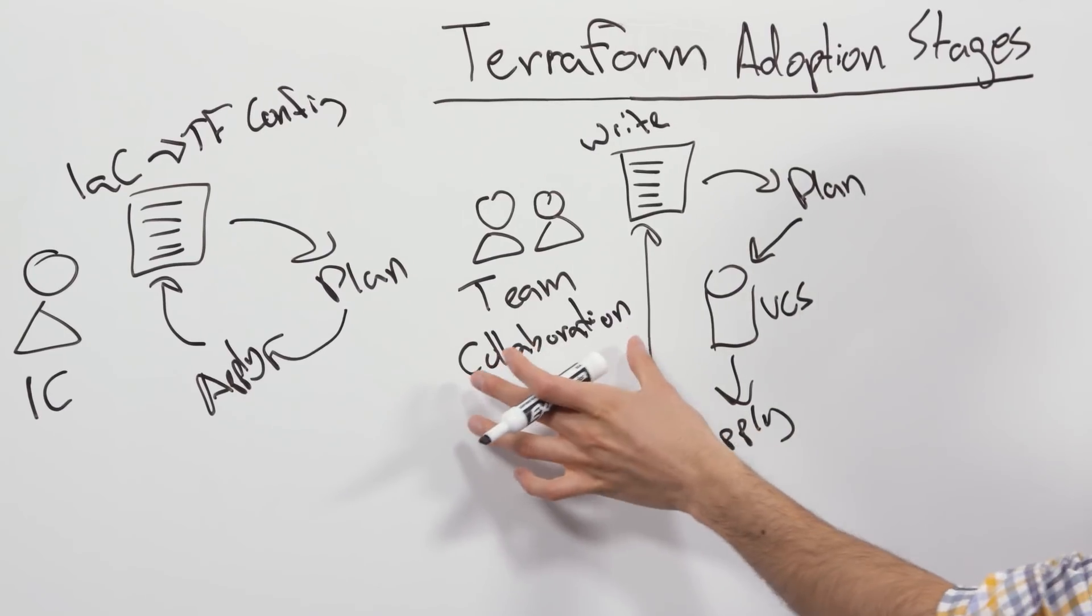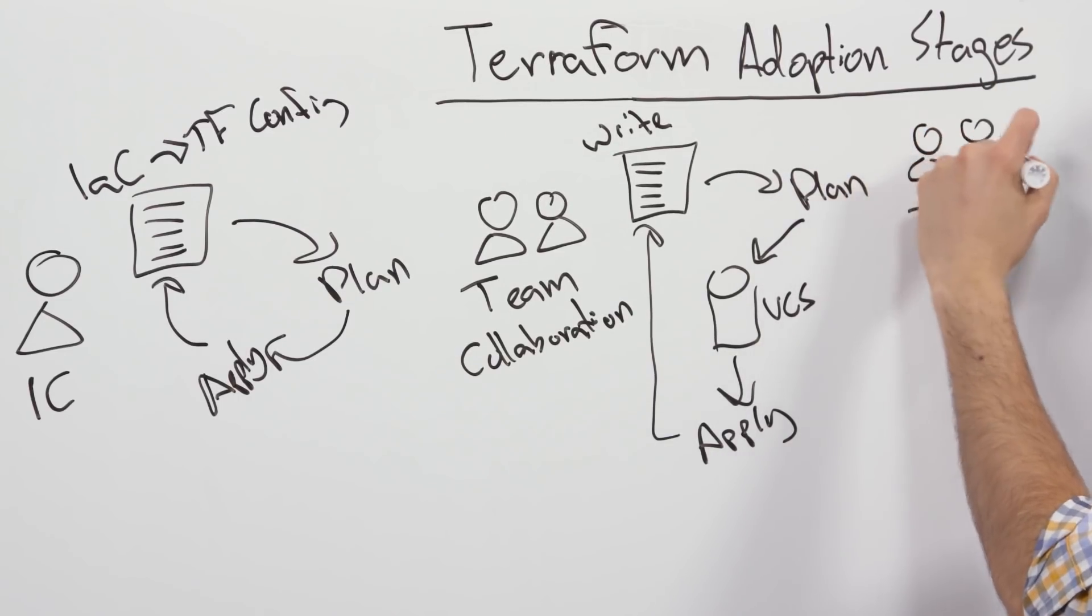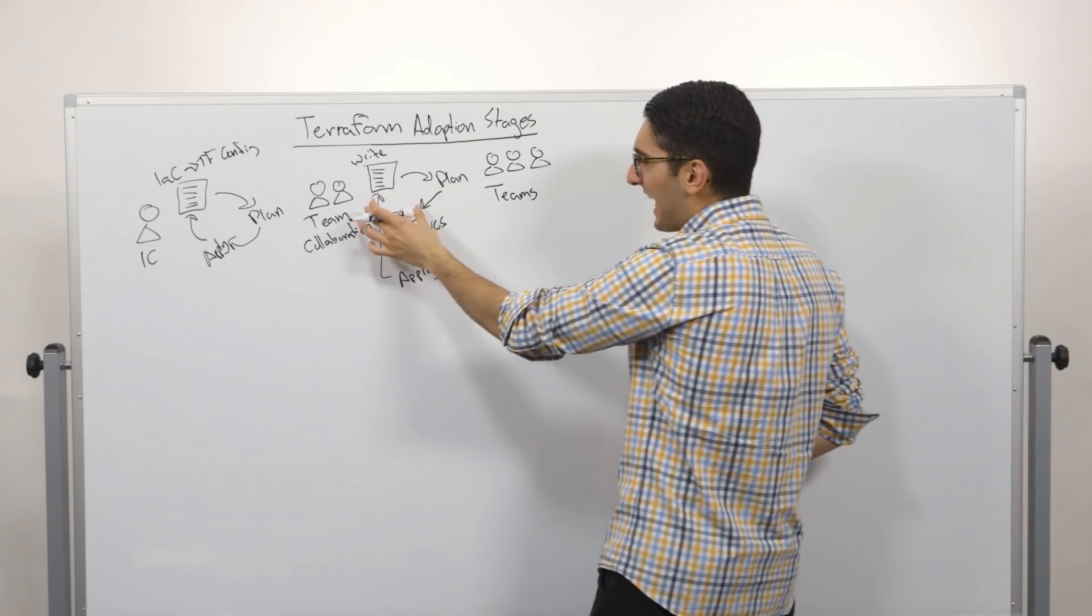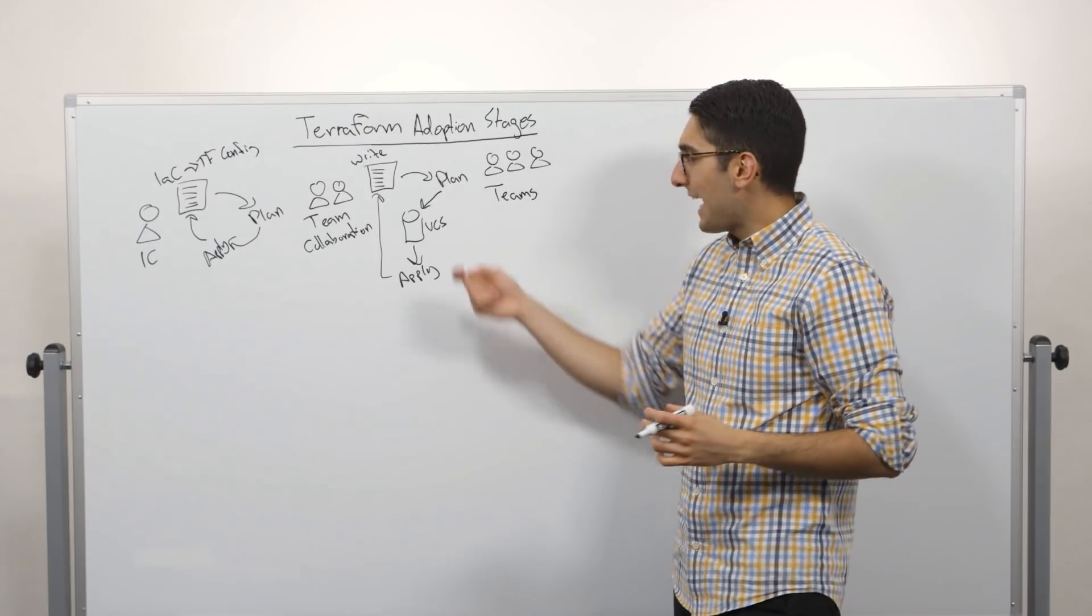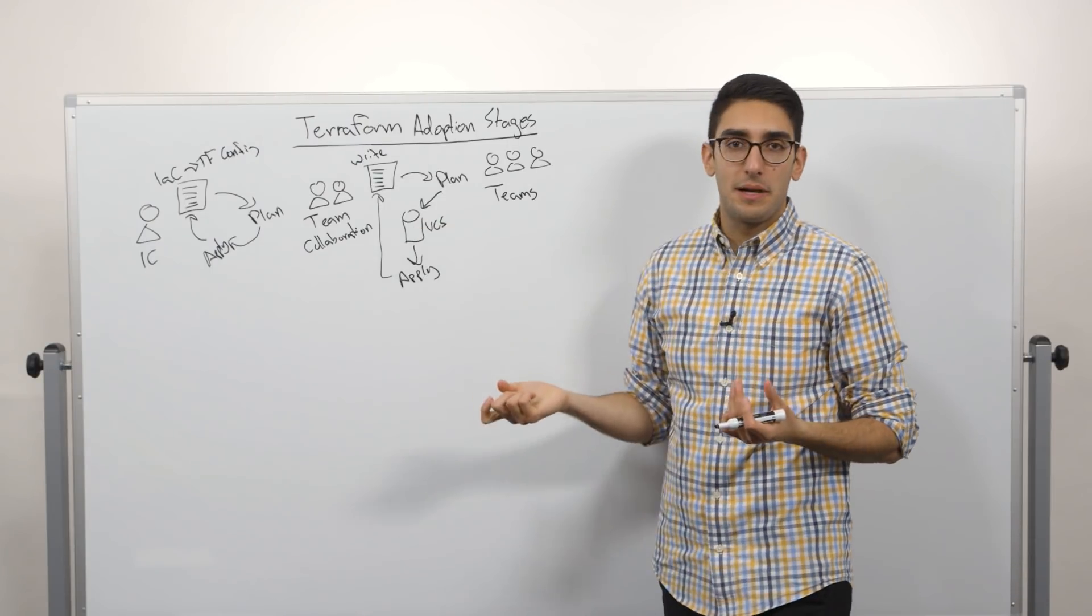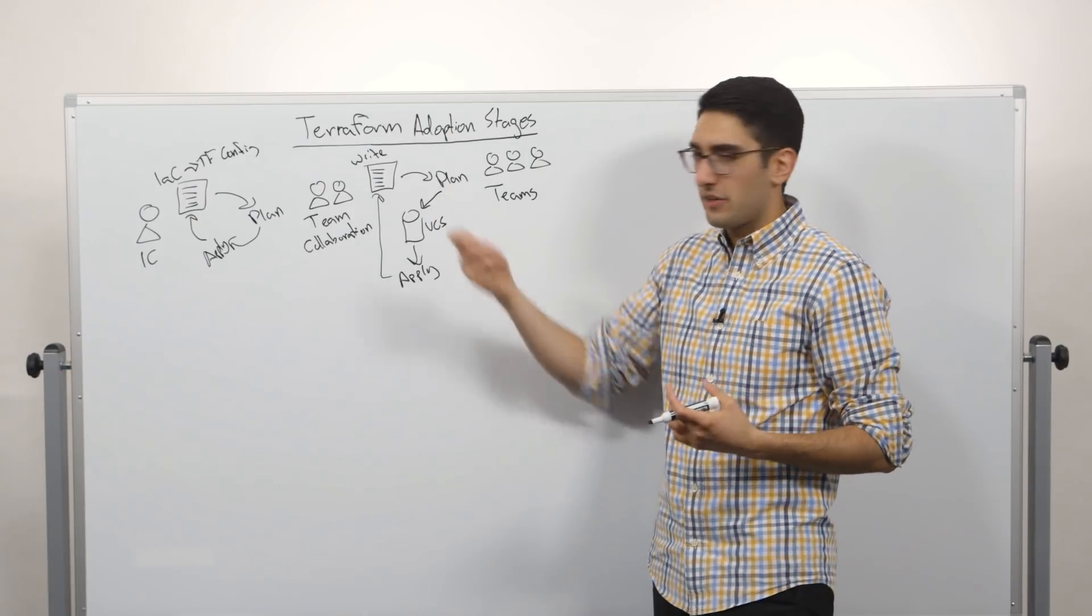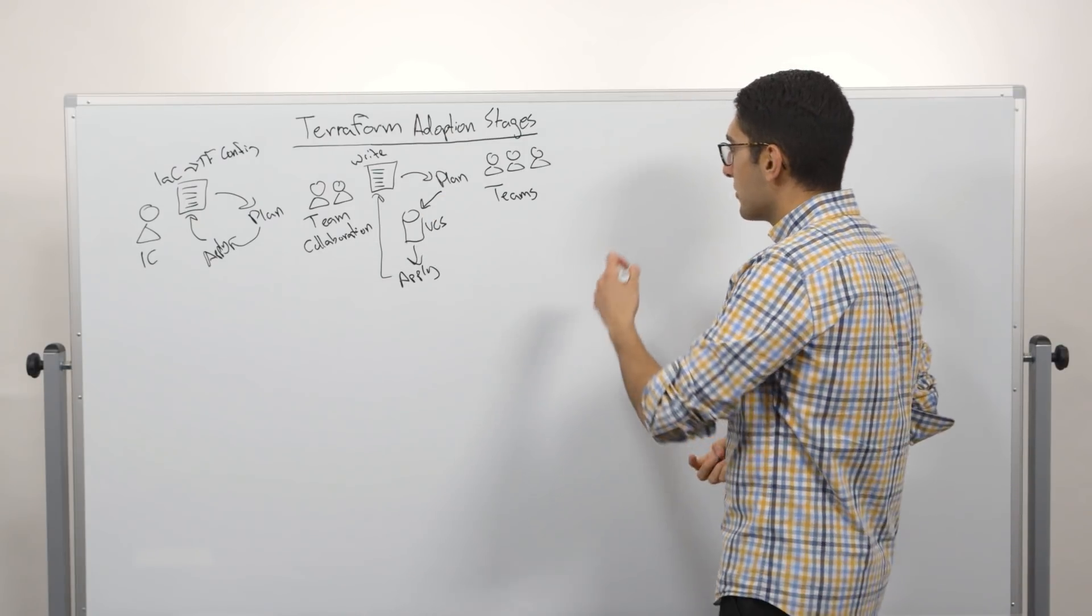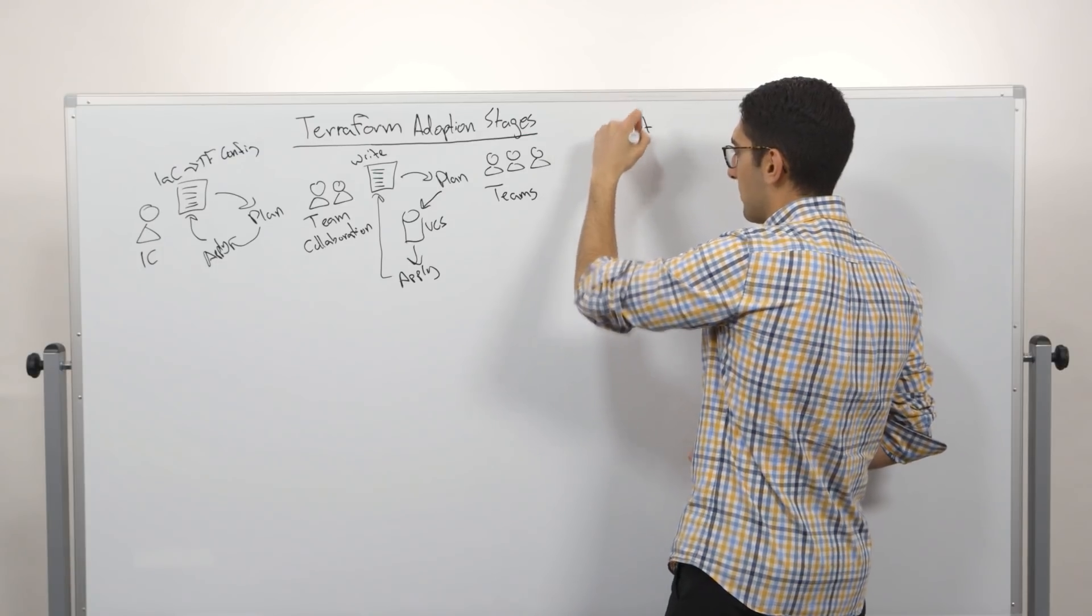As we go from a single team to multiple teams, what changes is now we have a decomposition we need to do. Over here, what we really had was a single set of Terraform configurations that defined all of our infrastructure. But as we go to many teams, this starts to become impractical. There's too much coordination required and the configuration becomes overly complex.